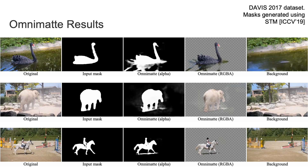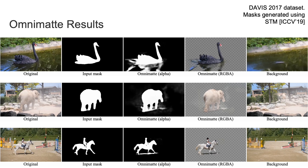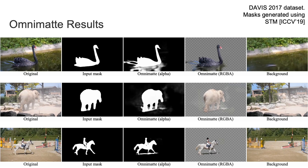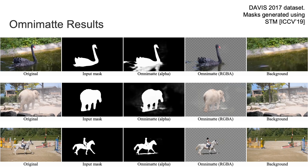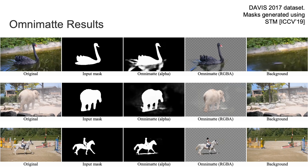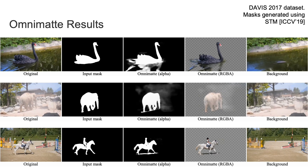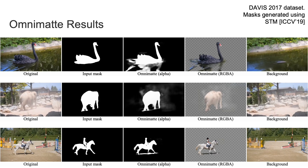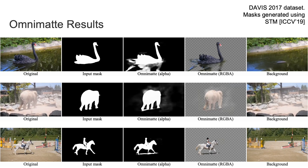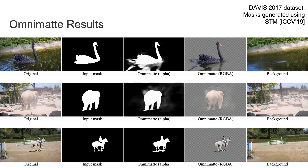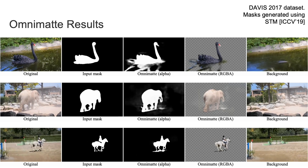Here are some results on videos from the Davis dataset. As can be seen, our method handles a variety of object classes and different effects. In this video of a swan, the omnimat captures the reflection of the swan in the water as well as the water ripples behind it. This result on an elephant throwing dust demonstrates our model's ability to handle the challenge of semi-transparent effects. In this example of a person riding a horse, our omnimat result captures the shadow.